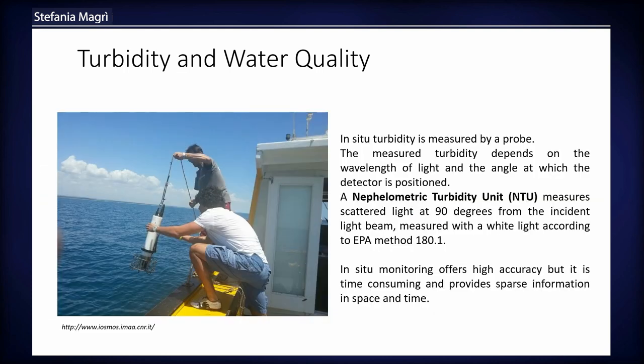In-situ turbidity monitoring is done by a probe. Turbidity is not the only measure taken, so it's usually measured with a multi-parametric probe that also measures other parameters. The measured turbidity depends on the particles present in water, but also on the instrument, the wavelength of the light, and the angle at which the detector is positioned. For example, nephelometric turbidity units (NTU) measure scattered light at 90 degrees from the incident light beam using white light. In-situ monitoring offers high accuracy but is time-consuming and provides information that is sparse both in time and space.